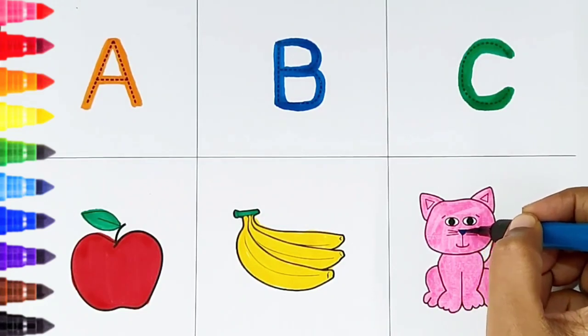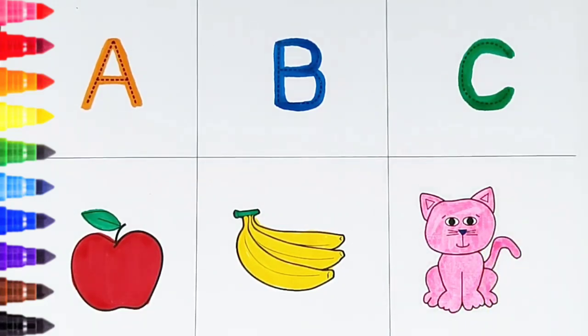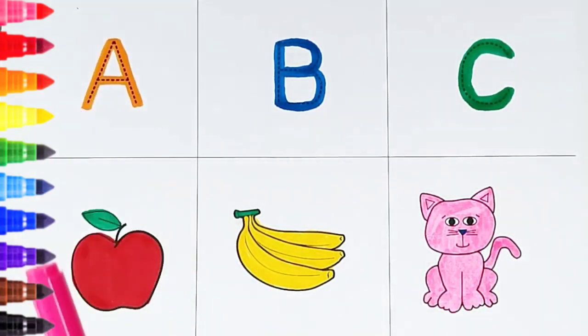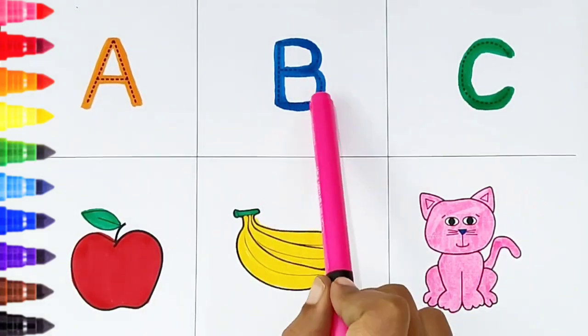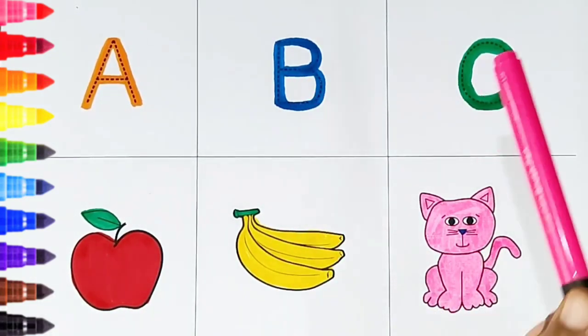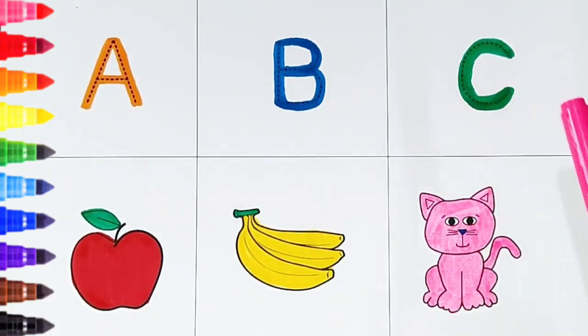Once again. A, A is for apple. B, B is for banana. C, C is for cat.